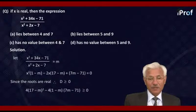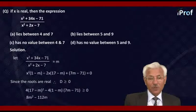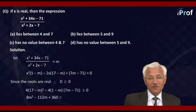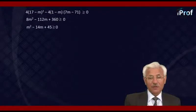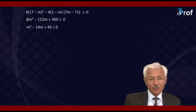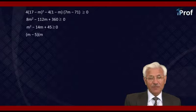Simplifying, we get 8M squared minus 112M plus 360 greater than or equal to 0. Dividing by 8, we get M squared minus 14M plus 45 is greater than or equal to 0. Factorizing, we get (M minus 5) times (M minus 9) is greater than or equal to 0.